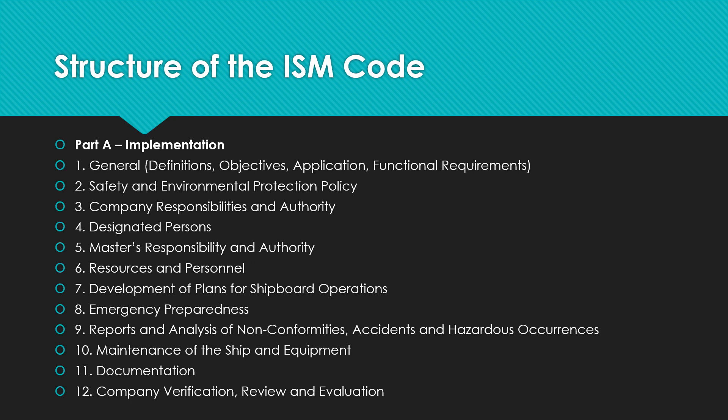Part 5 talks about the master's responsibility and authority. The company should clearly define and document the master's responsibility regarding implementing the safety and environmental protection policy and motivating the crew in observing the policy. Part 6 covers resources and personnel — the company should ensure that the master is properly qualified, fully conversant with the company's safety management system, and given the necessary knowledge and support so that the master's duties can be safely performed.